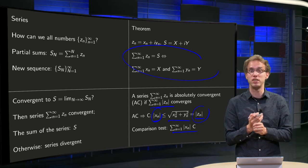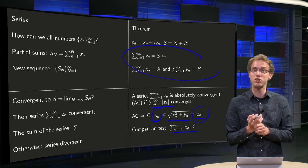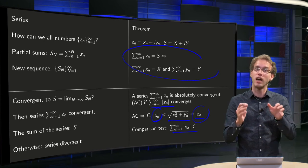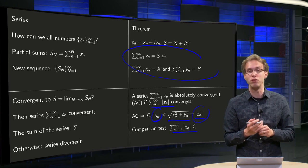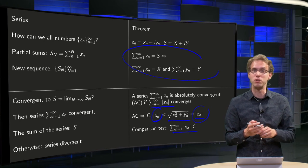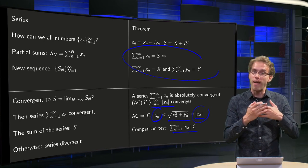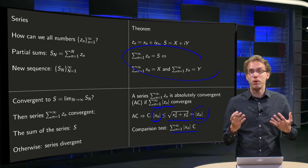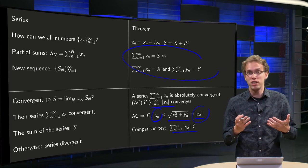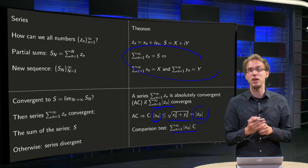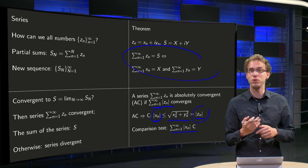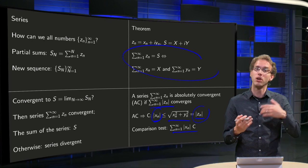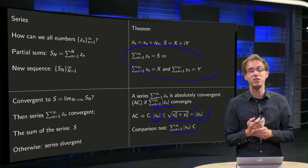So absolute convergence is stronger than normal convergence, and we will usually look at absolute convergence of complex numbers. Series behave completely the same as in the real case, which means we can use everything we know from real series for our complex series as well.